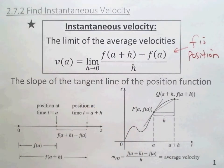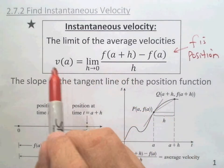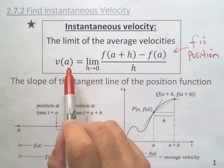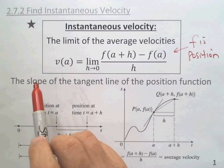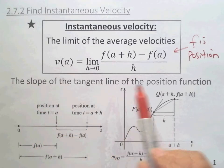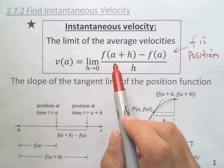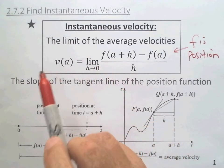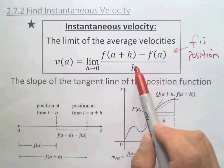We have another understanding. This instantaneous velocity, as you will see from the graph, is exactly the slope of the tangent line of the position function. This means that instantaneous velocity problems will be consistent with the slope problem — exactly the same. We're going to understand why this is the slope of the tangent line of the position function.